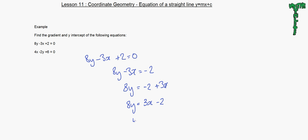Now, we're halfway there. y equals 3 over 8 minus 2 over 8. And so now we know the gradient is 3 over 8 and the y-intercept is 2 over 8. Or in other words, y equals 3 over 8x minus 1 quarter, simplifying 2 over 8.